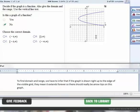To find the domain and range, we have to infer that if the graph is drawn all the way up to the edge of the visible grid, they mean that it extends forever. So there really should be arrow tips on this graph.